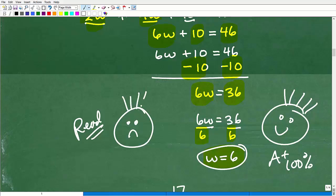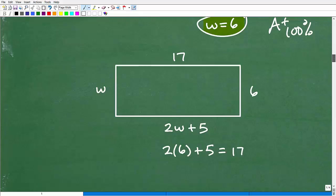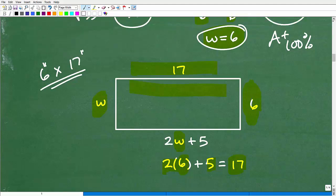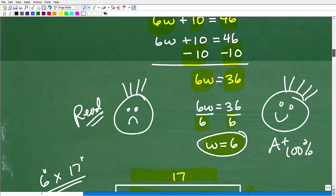But now we've got to read the problem again. Why? Because we've got to make sure that we answer the question. If you stopped here because you were so excited, w equals 6, look at me, I'm so awesome, I would have to take some points off. I want the dimensions of this rectangle. You just told me w equals 6. But what is the length? I've got to go plug in. If w is equal to 6, I've got to plug in 6 for it. So 2 times 6 is 12, plus 5 is 17. So the dimensions of this rectangle is 6 by 17 inches. That's the final answer.